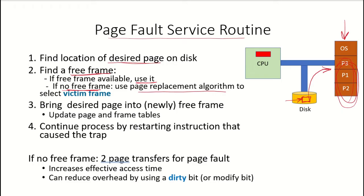Out of the currently occupied frames, one frame must be freed. The victim frame is determined by a page replacement algorithm. Once that frame is free, the desired page is brought into it and the page and frame tables are updated accordingly. The page table will show that the page is now valid and available in the specified frame. The CPU will then continue the process by restarting the instruction that caused the trap, since a page fault generated a trap to the OS to fetch the page from disk.